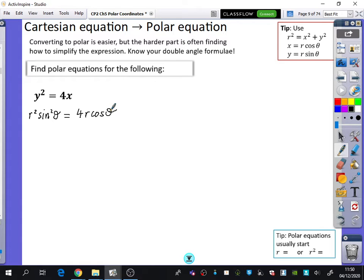And I want to simplify this. What can I do to both sides? Divide by r. So I'm going to get rid of the squared and the r, so then I have r = 4 cos θ over sin² θ. Cos θ over sin² θ can simplify to what? Cos θ. Good. So it is 4 cot θ cosec θ.